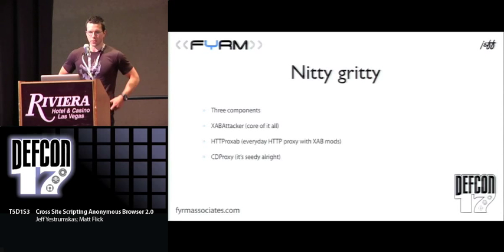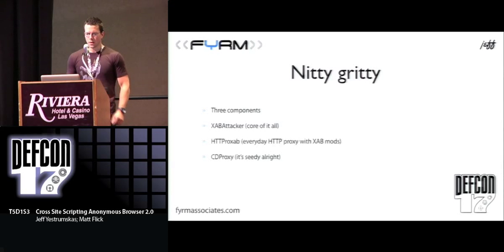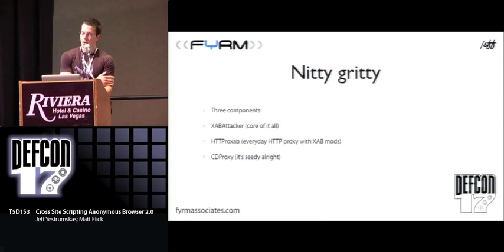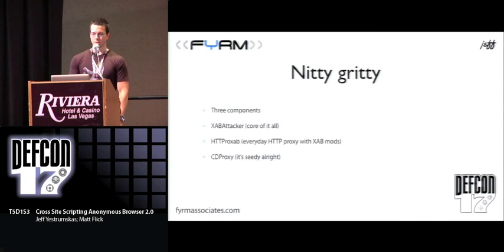Now let's get into the nitty gritty as to how all of this works. There are three primary components. The first is XAB Attacker — this is the core of everything. This is what handles receiving new requests for data, delivers the JavaScript payload and the commands and requests we wish to execute on the victims or participants. HTTP Proxy B is a simple HTTP proxy used by the attacker to seamlessly browse the web through the XAB framework anonymously. And CD Proxy is a cross-domain proxy that allows us to get around the cross-domain sandbox — the inability to make an XMLHttpRequest to another site.